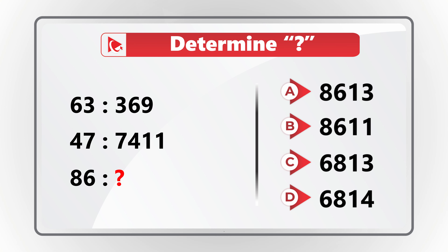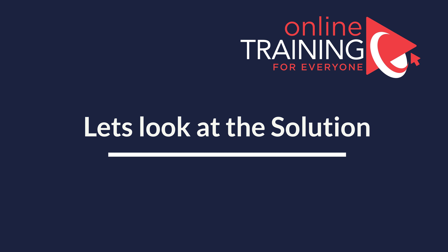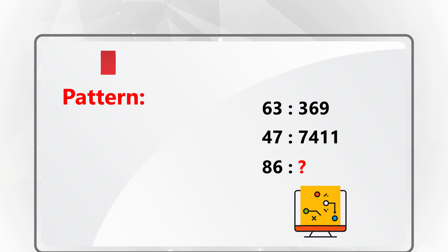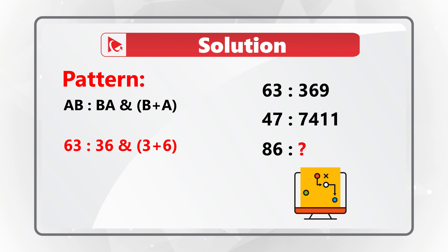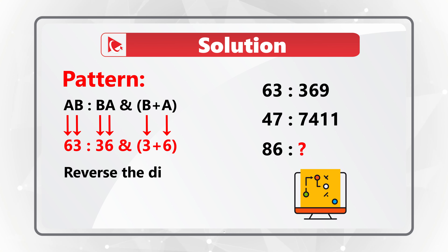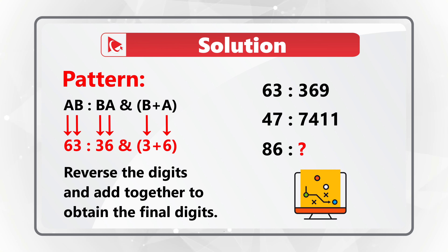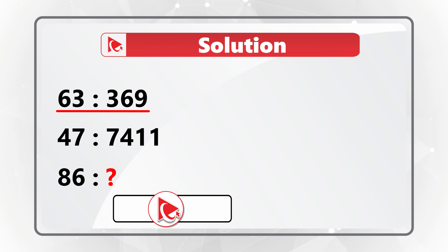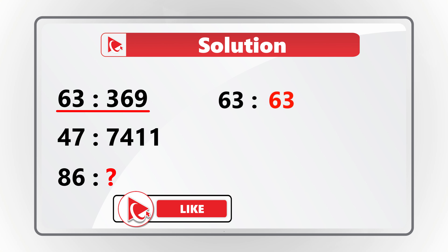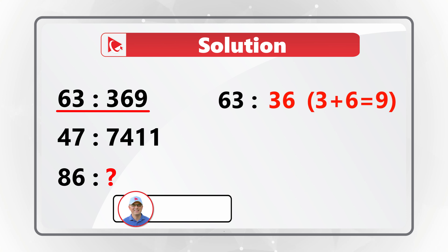To solve this and similar challenges, look for patterns. The pattern is that AB relates to BA plus (B + A) — you reverse the digits and add the digits together to obtain the final digits. For example, 63 relates to 369: we swapped 3 and 6 making 3 the first digit and 6 the second, then added 3 + 6 to get 9.